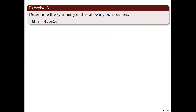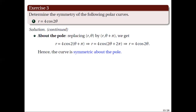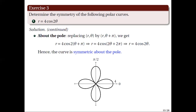Testing symmetry about the pole by applying the following replacement, we get r equal to 4 cosine 2 times theta plus pi, which is equivalent to r equal to 4 cosine of the quantity 2 theta plus 2 pi. Since cosine is a periodic function, this is also equivalent to r equal to 4 cosine 2 theta. Hence, the curve is symmetric about the pole. The graph of the curve is shown below. In fact, from a remark in the previous lecture, if a polar curve is symmetric about 2 of the 3 — polar axis, phi over 2 axis, and the pole — then it is symmetric with respect to all 3.